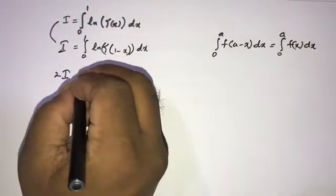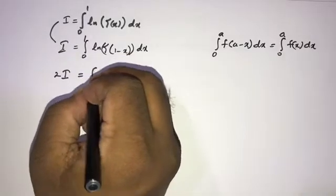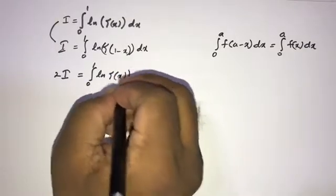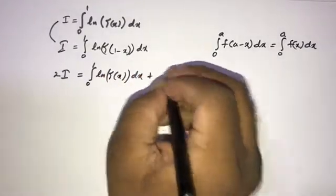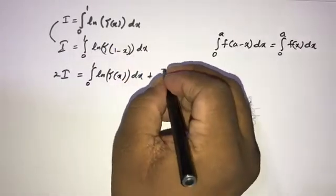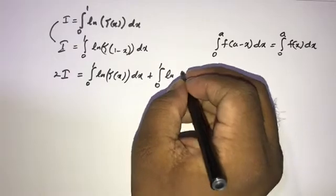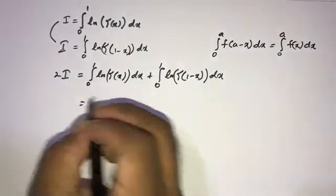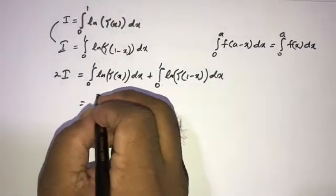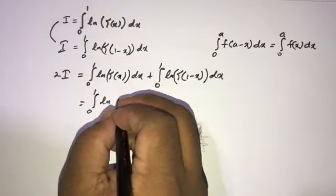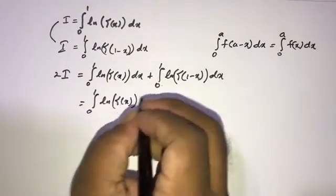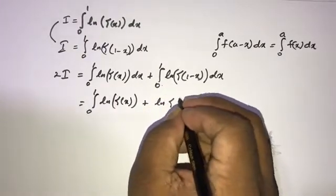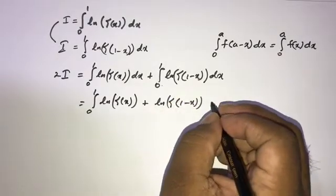So 2 times I is equal to the integral from 0 to 1 of natural log of gamma(x) dx, plus the integral from 0 to 1 of natural log of gamma(1 minus x) dx. Since the limits are the same, we can write this as the integral from 0 to 1 of [ln gamma(x) plus ln gamma(1 minus x)] dx.